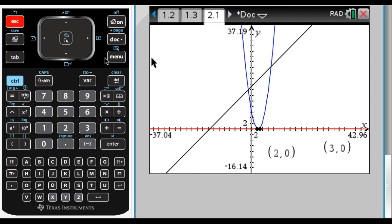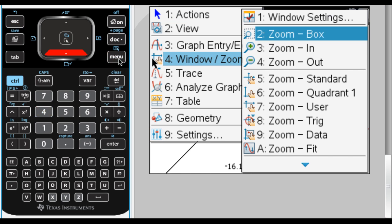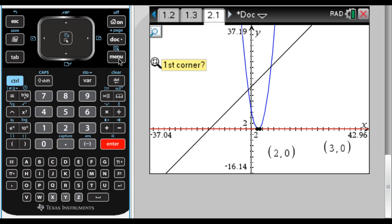Now I'll show you what zoom box does. If you press menu and you go to 4, option 2 is zoom box. Zoom box does something that's pretty cool. What you do is you drag a rectangle. It's asking for the first corner, so I'm going to pick over here, and you click, and you hold it down and drag.